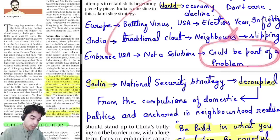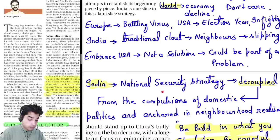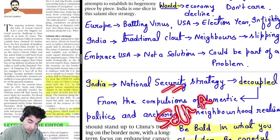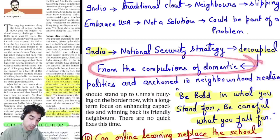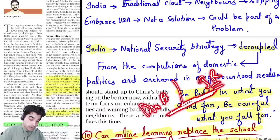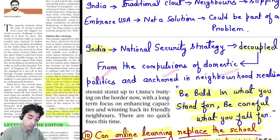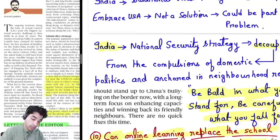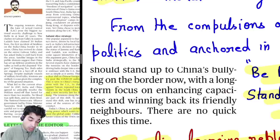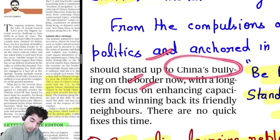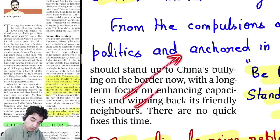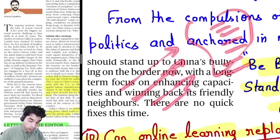In this backdrop, India should not quickly embrace the USA — that could be part of the problem, not the solution. India should first work on its national security strategy. The self-reliant effort we are making is a very good step — we need to make it successful. We should decouple from domestic political compulsions — domestic politics is one thing, international relations is another; they should not be mixed. Our international relations should be anchored in neighborhood realism — goodwill with neighbors, even Nepal, Pakistan, Afghanistan, and Bangladesh, must be maintained.